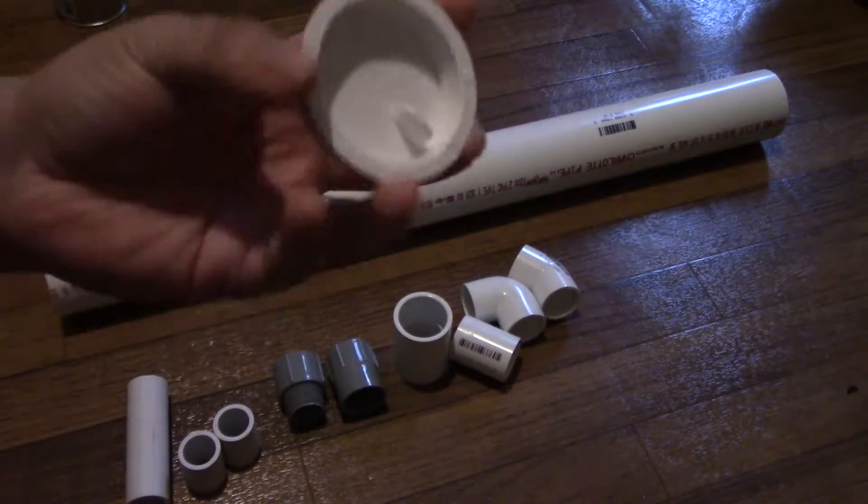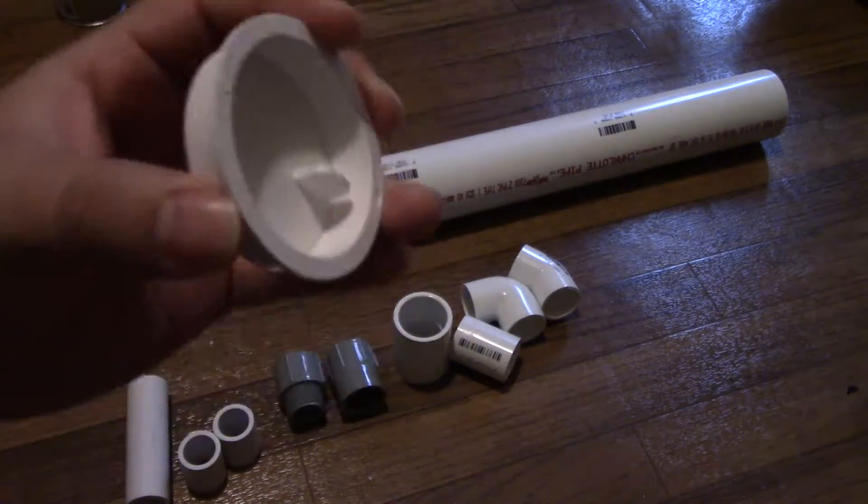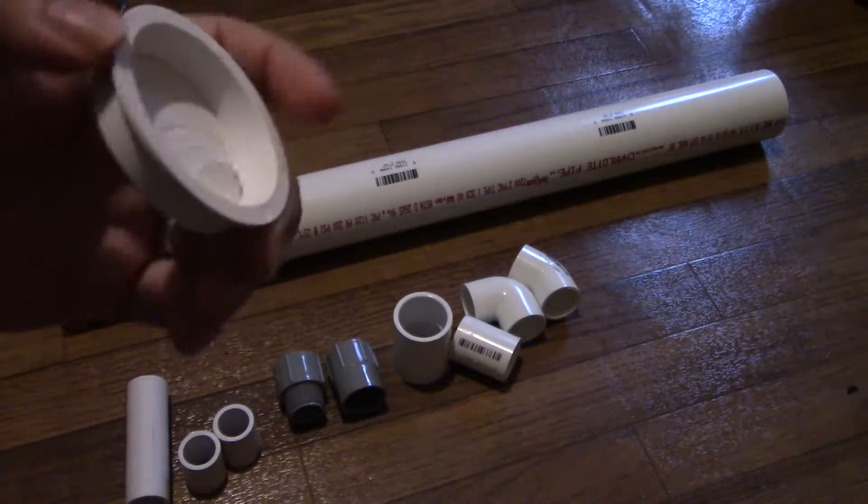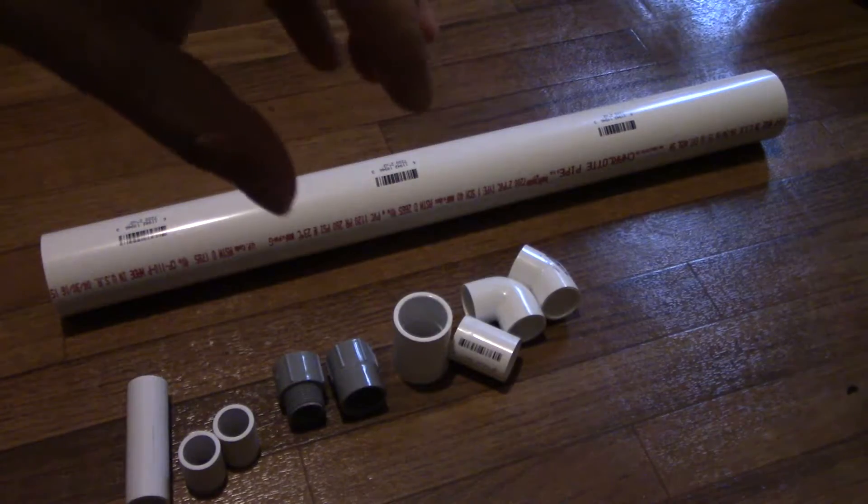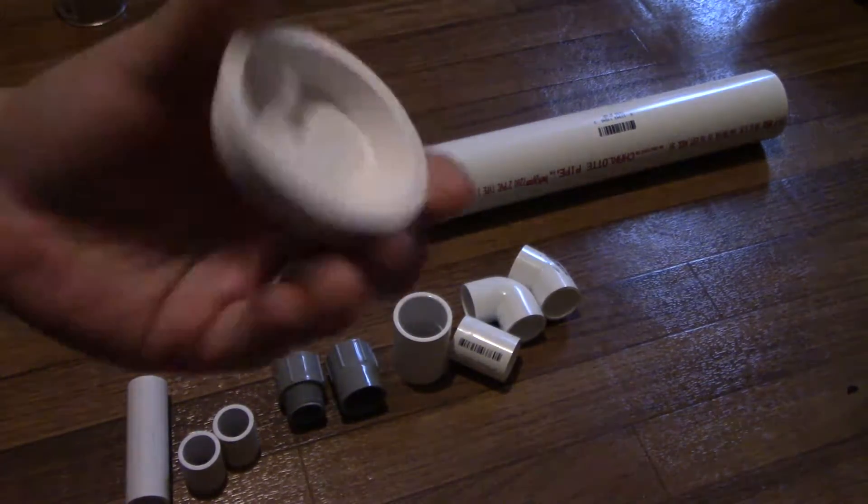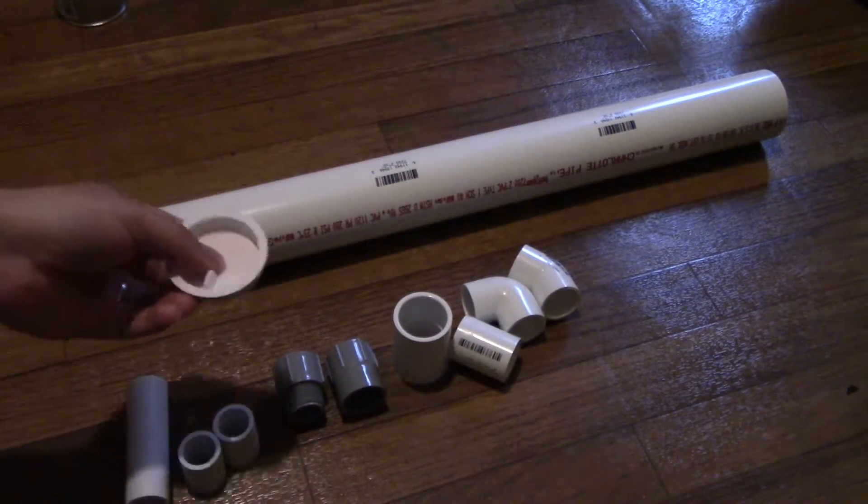A two-inch knockout test cap. This is for the bell siphon, this is the plug. Most people use just the big PVC plugs, but this is 35 cents versus about a dollar fifty or two dollars.